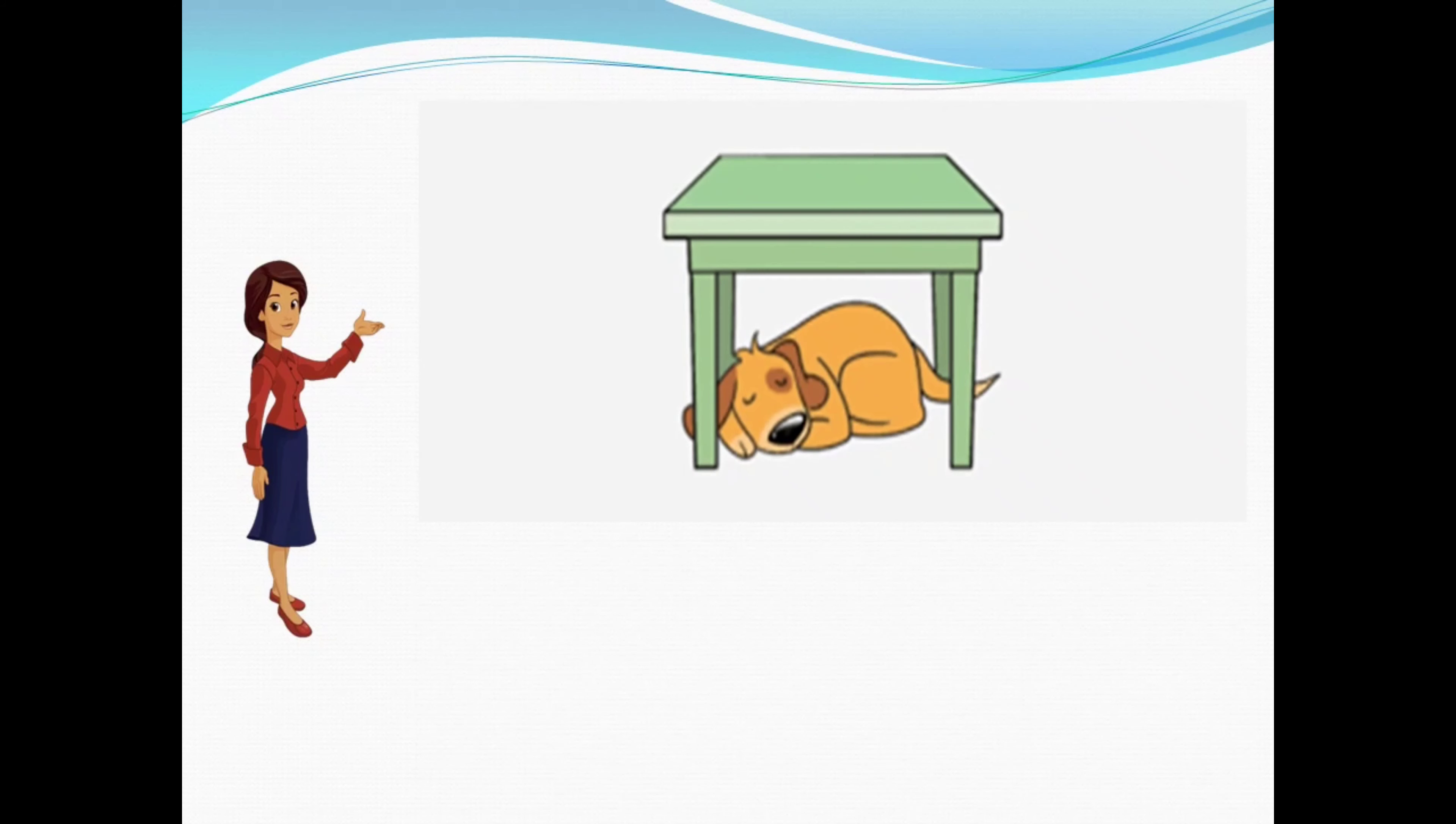Now we come to another example. As we can see in the picture given here, there is a table and there is a dog. From this picture we can know that the dog is sleeping under the table. So here the word 'under' refers to the preposition.